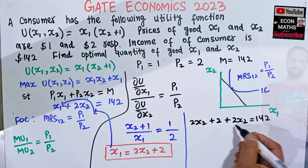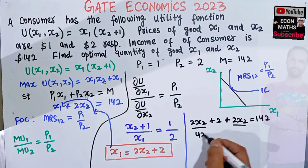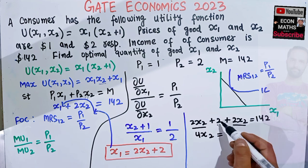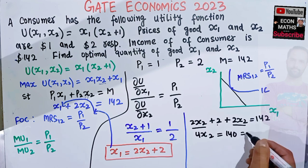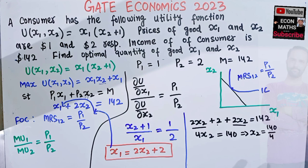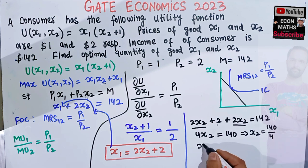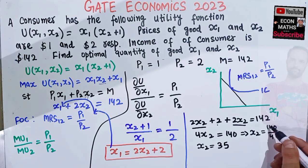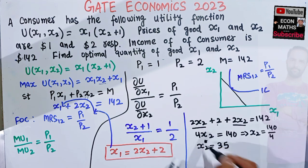Substituting x1 = 2x2 + 2 into the budget constraint: (2x2 + 2) + 2x2 = 142. Combining like terms gives 4x2 + 2 = 142, so 4x2 = 140. Dividing, x2 = 140/4 = 35. The optimal quantity of good x2 is 35 units.